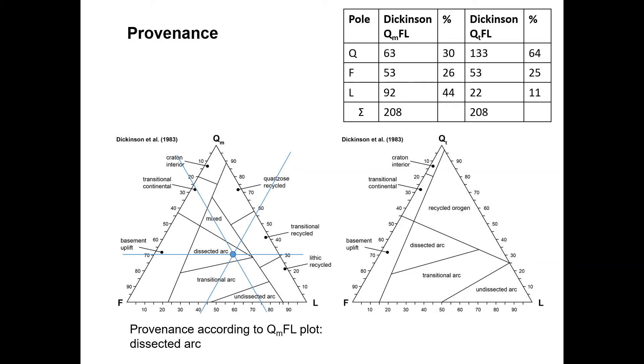For the QT-FL plot, we use 64% of Q, 25% of F, and 11% of L, which yields a recycled orogen provenance for the same sample. This happens quite frequently with the Dickinson plots and is the main point of criticism.